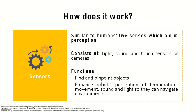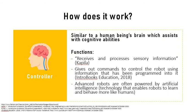Next, just as humans have five senses like sight and touch to aid in perception, robots have light, sound and touch sensors or even cameras to help them find objects and enhance their perception of temperature, light and movement so they can navigate different environments. Lastly, the controller functions as the robot's brain and assists with cognitive abilities. The controller receives and processes sensory information and gives out commands to control the robot based on information that has been programmed into it. Advanced robots today are often powered by artificial intelligence, which enables robots to learn and behave more like humans. These components are all interconnected and work together to enable robots to function.